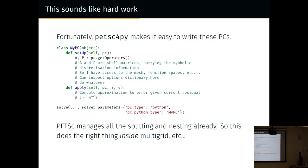This sounds like hard work because I've gone from programming with options to now you have to write your own preconditioners. Fortunately, thanks to Lisandro, PETSc for Py makes this almost trivial to do. I write a little preconditioner, I write the setup method and the apply method, then I say PC type Python, PC Python type my PC, and it all works. PETSc still manages all the splitting and nesting, so this does all the right stuff inside multigrid and so on.